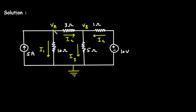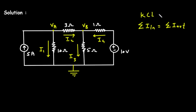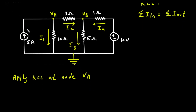Now we will apply KCL at node VA. According to KCL, the summation of all the currents entering a node is equal to the summation of all the currents leaving the node. Applying KCL at node VA, the entering current is this 5A current, so we write 5.